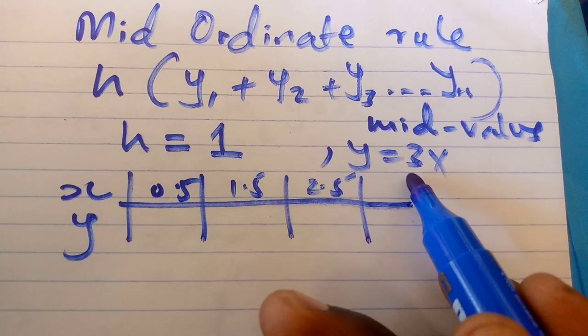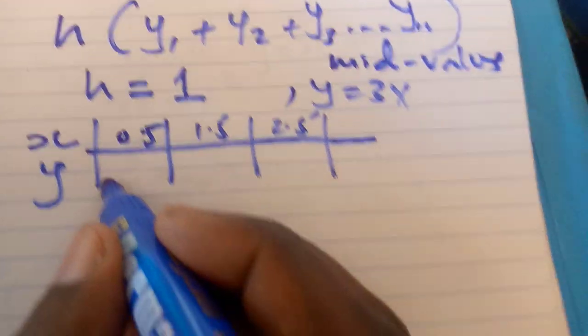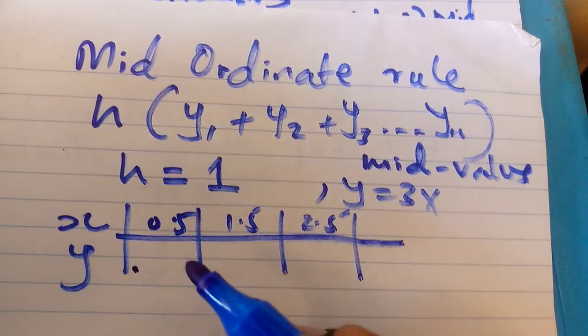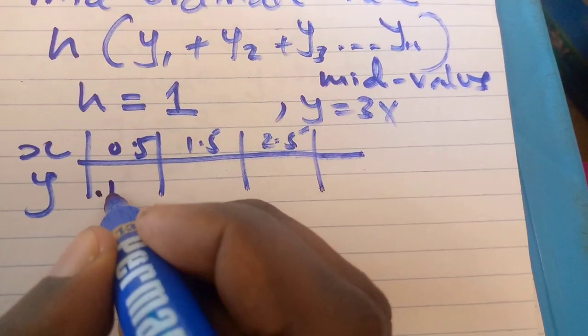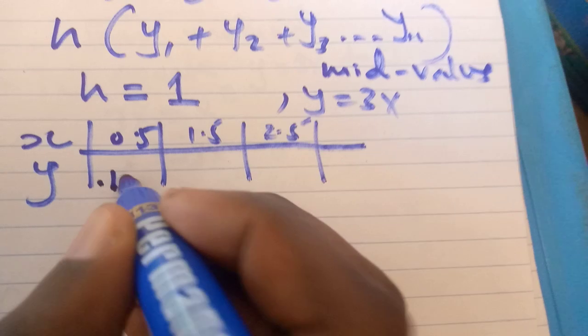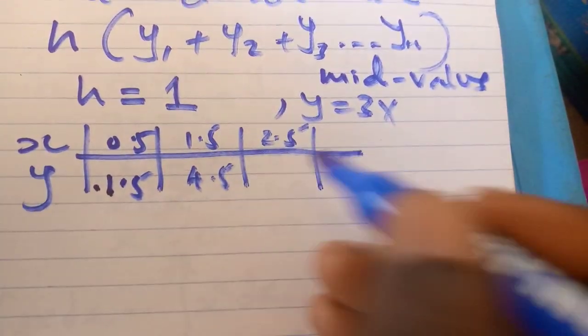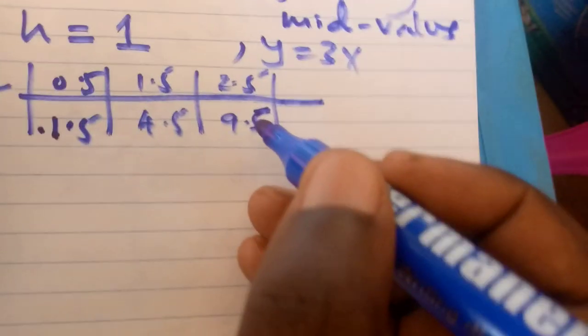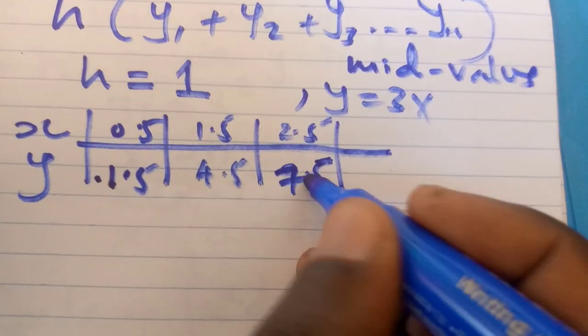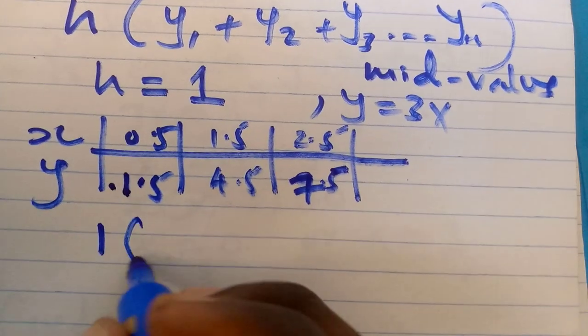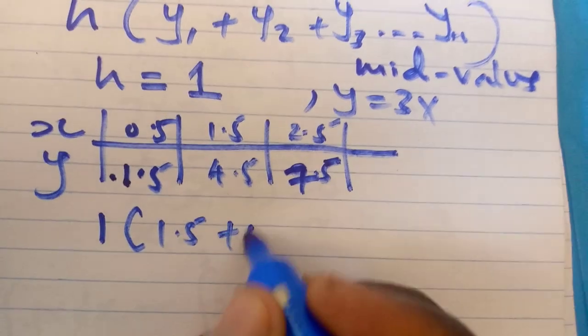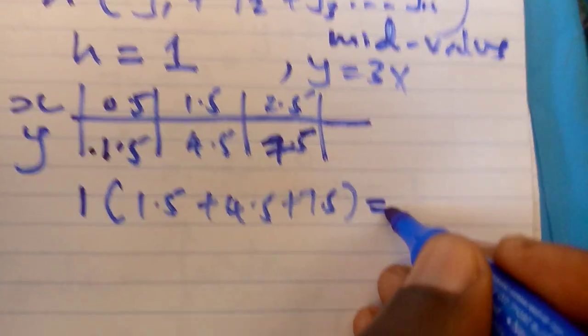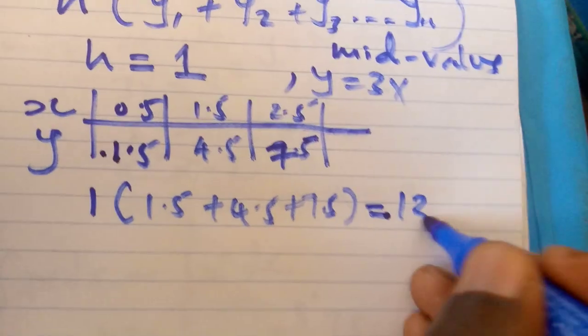So when I substitute in 3x, I have 1.5, 4.5, 7.5. I get the answer as 13.5.